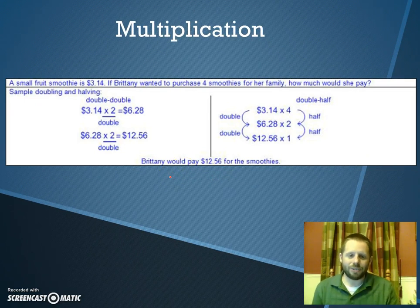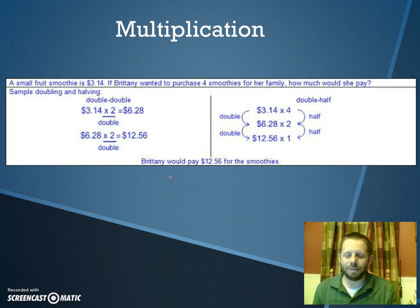This last multiplication strategy for decimals, you can't use this one all the time, but sometimes you can. And when you can, it does make it a little easier. It says a small fruit smoothie costs $3.14. If Brittany wanted to purchase four smoothies for her family, how much would she pay? Part of this, we can think, she wants four smoothies. If I know one of them costs $3.14, then two smoothies should cost double that.